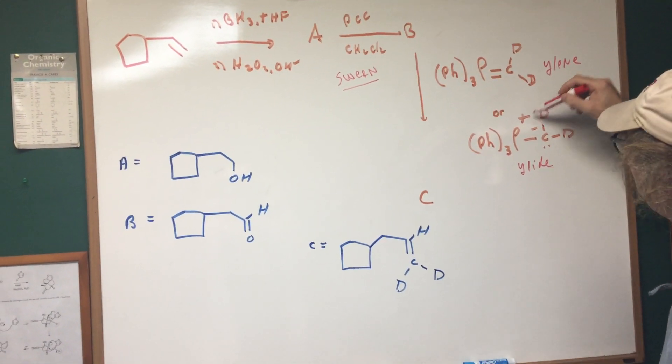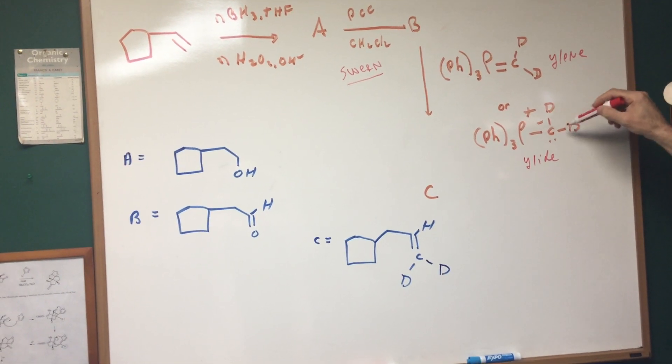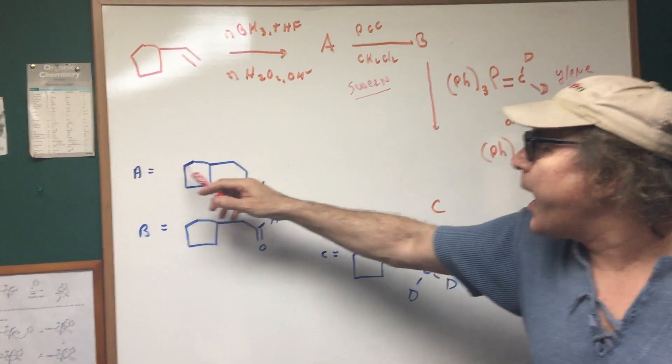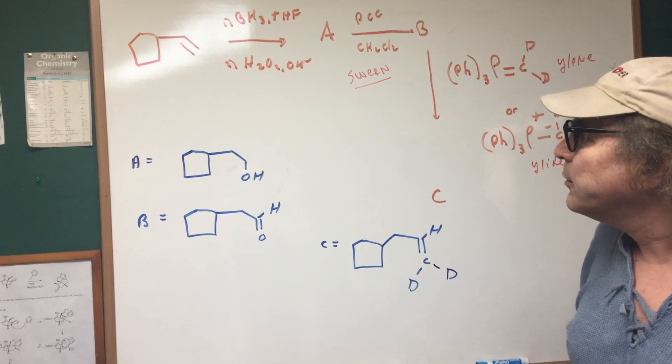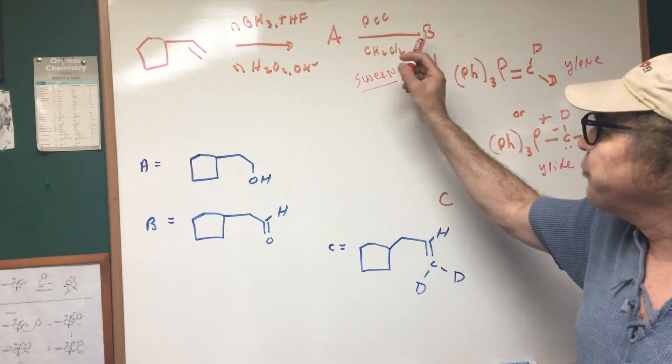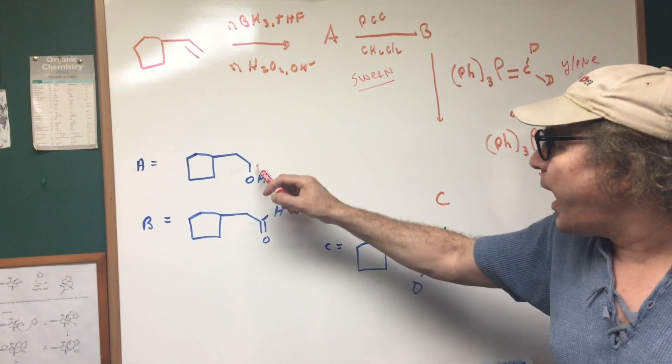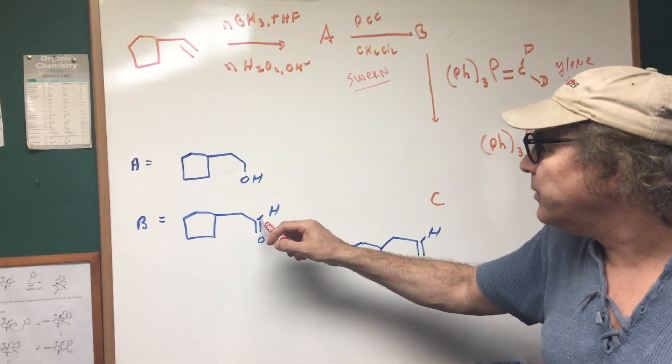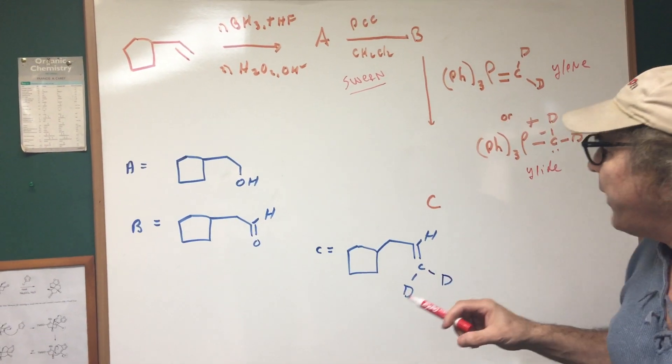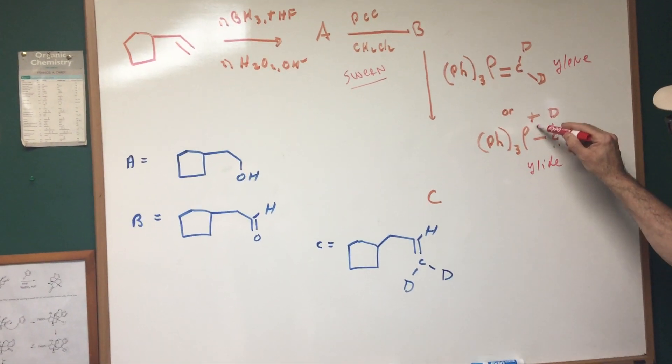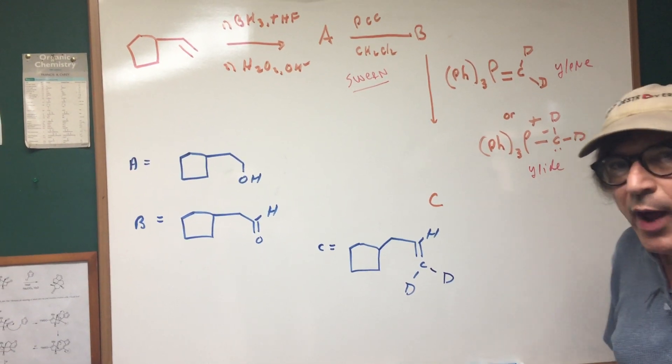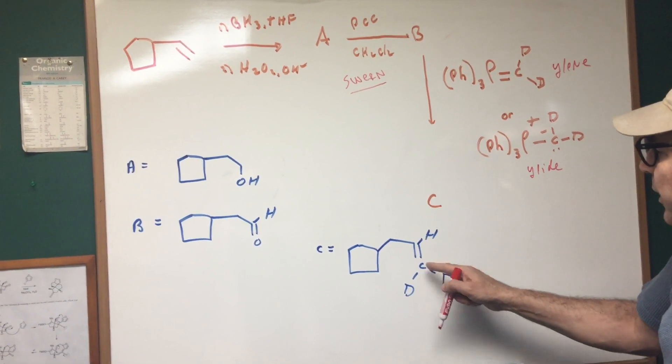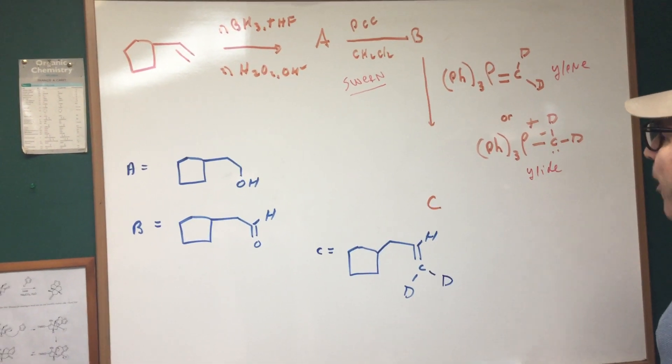So in the first reaction, all we did was add on an OH anti-Markovnikov, that's A. From A to B, I simply oxidized this carbon to get to the aldehyde, and then all I did was put on the carbon moiety, and here is a very clever way how I doubly deuterated a double bond.